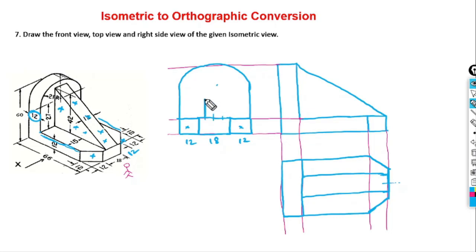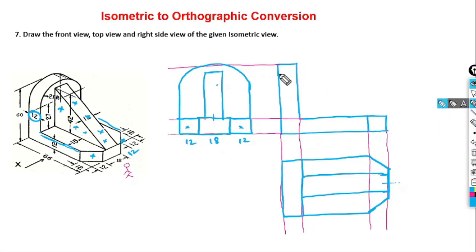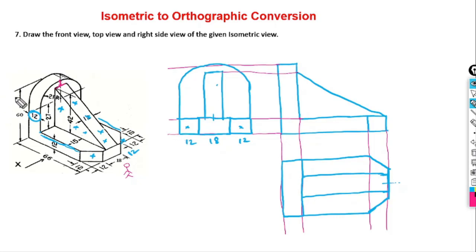For the inclined block in the side view, it is 18 mm wide — so left side 6 mm and right side 6 mm from center. The block starts somewhere over here and we take a projection line from that particular point. There is a gap to calculate: total height is 60 mm, and 42 plus 12 equals 54, so this gap is 6 mm. This completes the front view, top view, and right side view for the given isometric view.